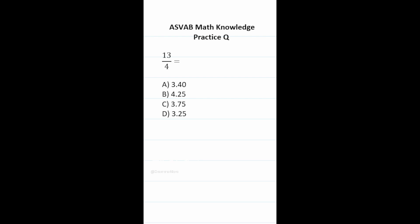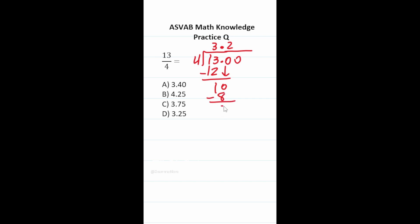This math knowledge practice test question for the ASVAB and PyCat says: 13 over 4 equals which of the following decimals? The improper fraction means 13 divided by 4. Four goes into 13 three times (4×3=12), remainder 1. Add a decimal and zero placeholders; bring the decimal into the answer. Drop down a zero: 4 goes into 10 twice (4×2=8), remainder 2. Drop down the next zero: 4 goes into 20 five times (4×5=20), remainder 0. The answer is 3.25, choice B.